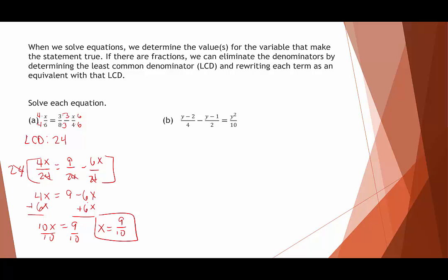In part B, the denominators are 4, 2, and 10, so the least common denominator is 20. We multiply the first fraction's numerator by 5, the second fraction's numerator by 10, and the third fraction's numerator by 2.